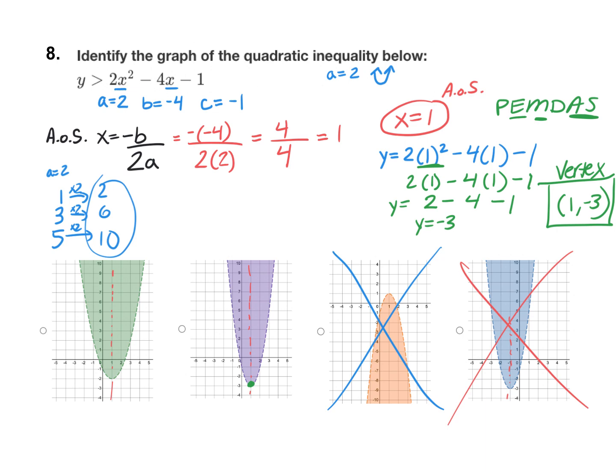And if I double check my purple graph, beginning at the vertex, up 2 over 1, lands us right there. Then up 1, 2, 3, 4, 5, 6 over 1 is there. I don't have enough space to go up 10, but I can see that it does match this purple graph.